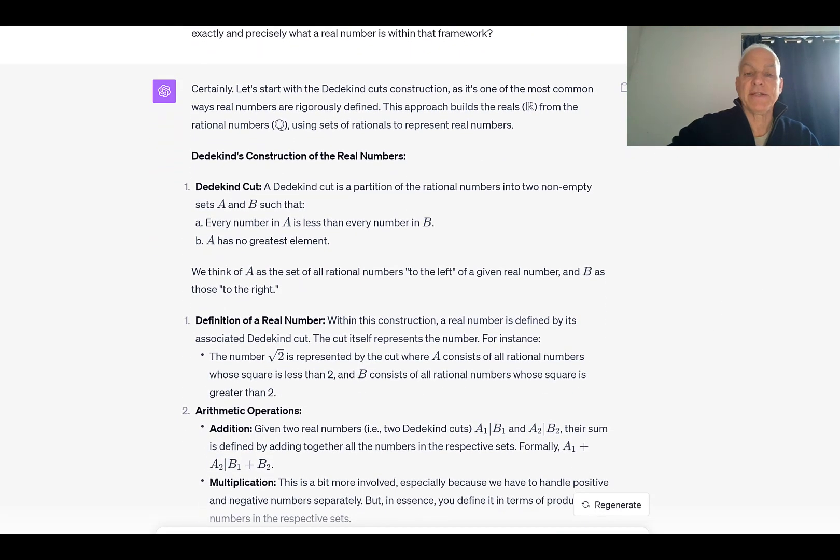ChatGPT: Certainly, let's start with the Dedekind cuts construction, as it's one of the most common ways real numbers are rigorously defined. This approach builds the reals, R, from the rational numbers, Q, using sets of rationals to represent real numbers. Dedekind's construction of the real numbers. Dedekind cut: A Dedekind cut is a partition of the rational numbers into two non-empty sets A and B, such that every number in A is less than every number in B, and A has no greatest element. We think of A as the set of all rational numbers to the left of a given real number and B as those to the right.